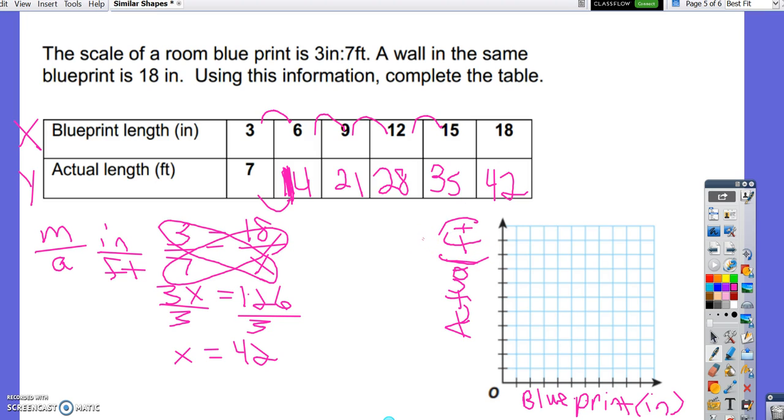So we need to make our intervals. So I'm going to number by 2's. So this will be 2, 4, 6, 8, 10, 12, 14, 16, 18, and 20. And then when we go up the y-axis, we'll go by 5's: 5, 10, 15, 20, 25, 30, 35, 40, 45.